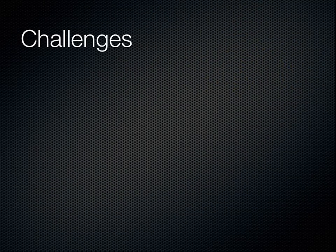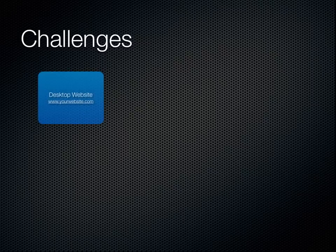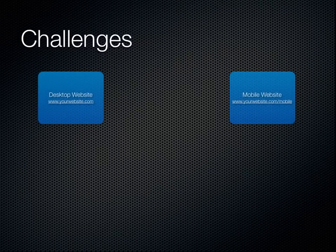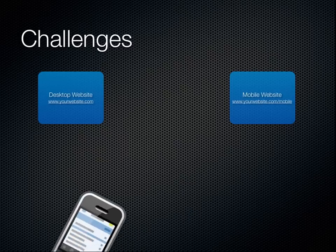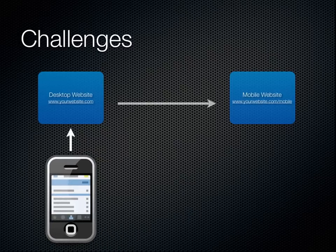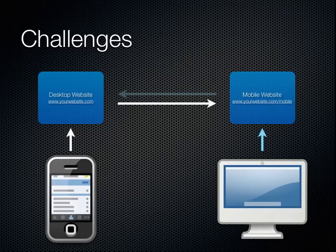So let's say that you realize how important it is to have a mobile website and now have one up and running. How do we make sure that someone using a cell phone will see the mobile website you've created? Say a cell phone user visits your main site — obviously you want them to be redirected to the mobile version. And what if a desktop user stumbles across your mobile site? There's no doubt you'd rather they see the standard version. But how do we make sure that people see the right version of your site?